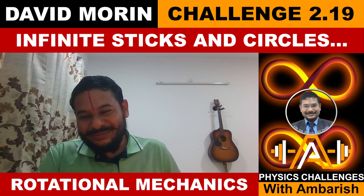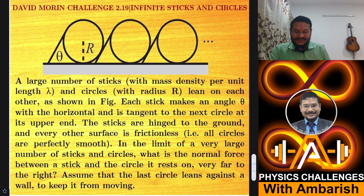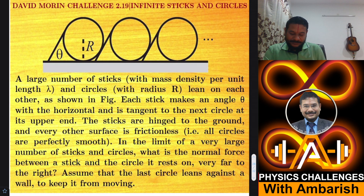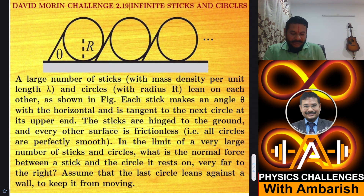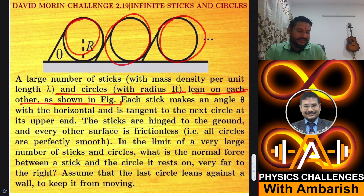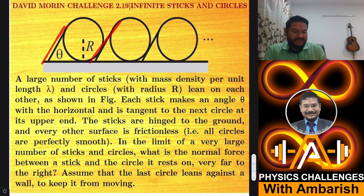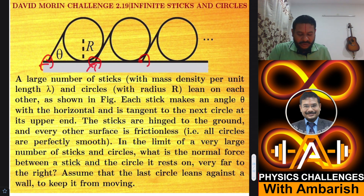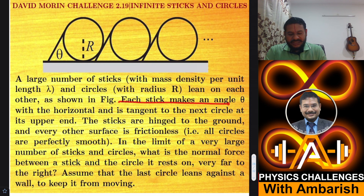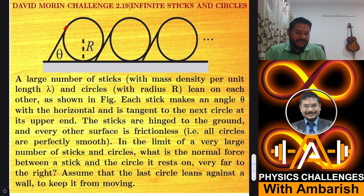Without further ado, let me get straight into the problem. A large number of sticks with mass density per unit length λ and circles with radius r lean on each other as shown in the figure. We have an infinite number of circles with sticks leaning against them. Each stick makes an angle θ with the horizontal and is tangent to the next circle at its upper end — this angle θ is the same everywhere.